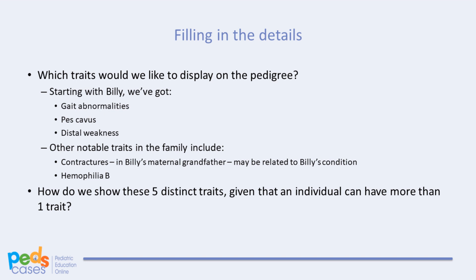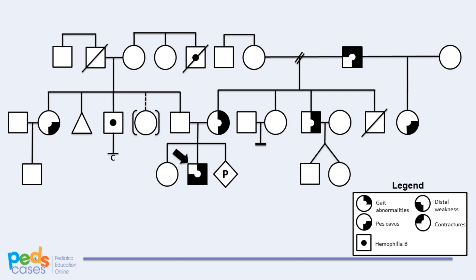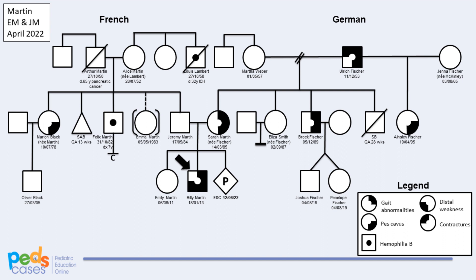Now that we've got the bones of the pedigree, we fill in the details. We decide which traits to display: Billy has presented with gait abnormalities, pes cavus, and distal weakness; Billy's maternal grandfather developed contractures; and several family members on his father's side have been diagnosed with hemophilia B. We have identified five distinct traits worth displaying. After assigning symbols for each trait in the legend, we add these symbols to our pedigree. Then we fill in details like names, dates of birth, and diagnoses, resulting in the final completed pedigree.